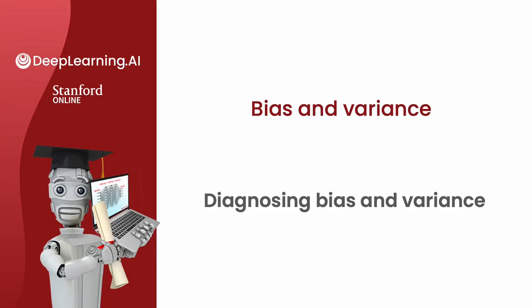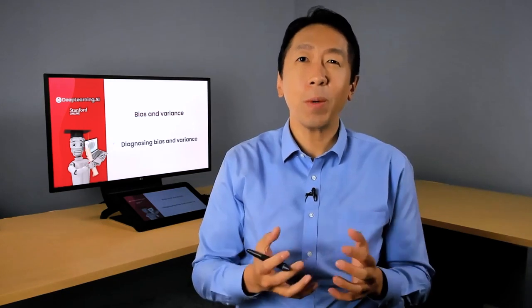The typical workflow of developing a machine learning system is that you have an idea, you train a model, and you almost always find that it doesn't work as well as you wish. When I'm training a machine learning model, it pretty much never works well the first time. Key to building a machine learning system is how to decide what to do next to improve its performance. Looking at the bias and variance of a learning algorithm gives you very good guidance on what to try next.